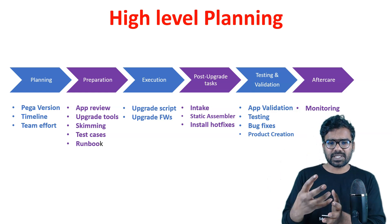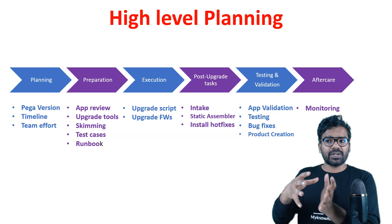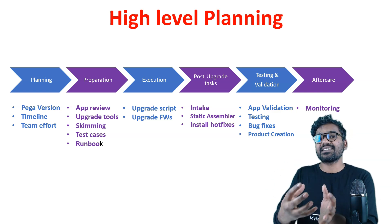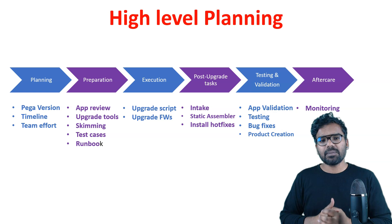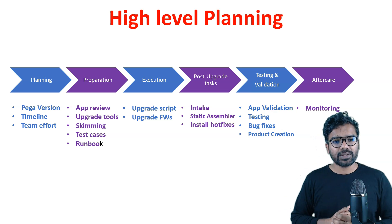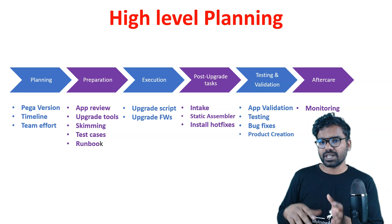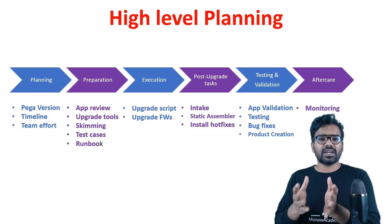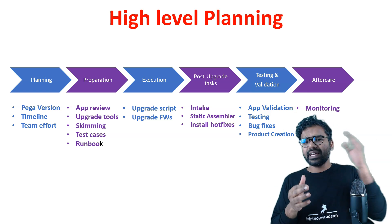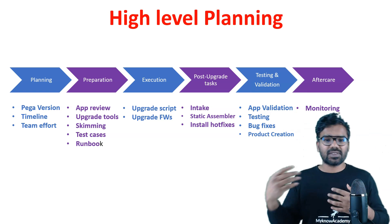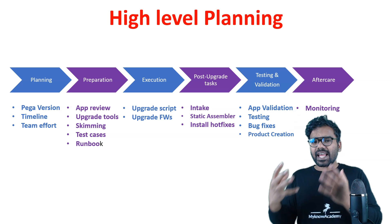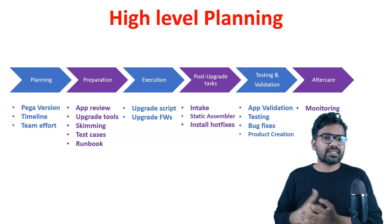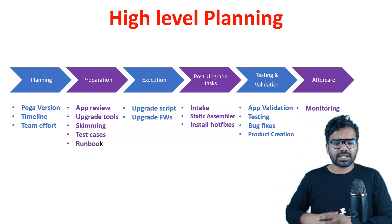You can also convince the business by looking at those versions and explaining what business value they provide. For example, 23.1 gives you all those Gen AI features, and 24.1 includes a lot of improvements both on AI and on Constellation. So there are valid use cases you can showcase to the business when deciding on the Pega version.